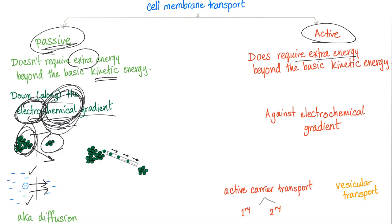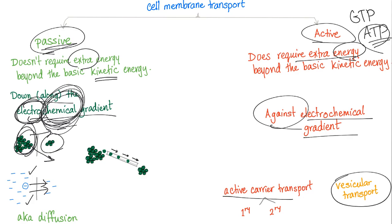Active diffusion, on the other hand, does require extra energy in the form of ATP, adenosine triphosphate, or GTP for example. It goes against the electrochemical gradient, that's why we need energy. We have two types: the vesicular transport and the active carrier transport, which is further subdivided into primary active and secondary active.